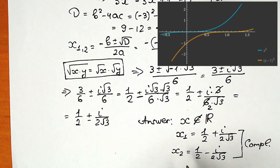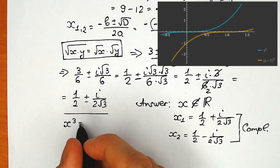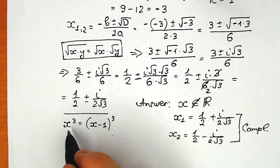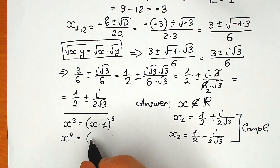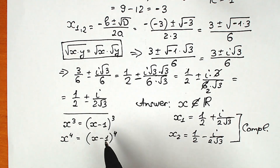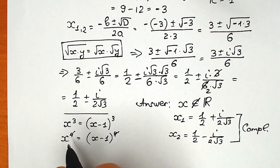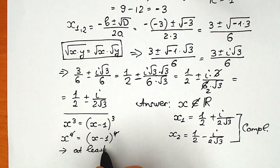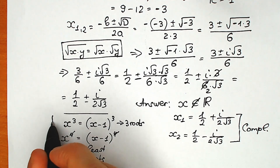Similarly, consider x to the fourth power equal to x minus 1 to the fourth power. You can cancel the powers, but don't forget about complex numbers — when you cancel the power you forget about complex solutions. Right here we have at least four roots. Right here, in our original cubic case, we have at least three roots. With simple cancellation you'd end up with only one equation, losing the complex part.